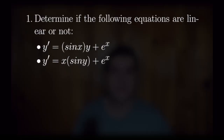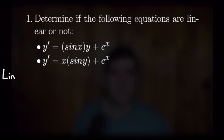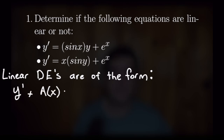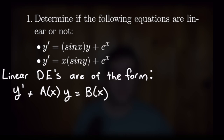For number one, we are going to determine if the following equations are linear or not. I've chosen these two equations because they are very similar, in an attempt to nail down exactly what we mean when we say an equation is linear or not, so we can see the clear differences between them. Recalling the definition: linear differential equations are of the form y prime plus a of x times y is equal to b of x. So we want a single y prime, added to a function of x times a single y, equal to any function of x.